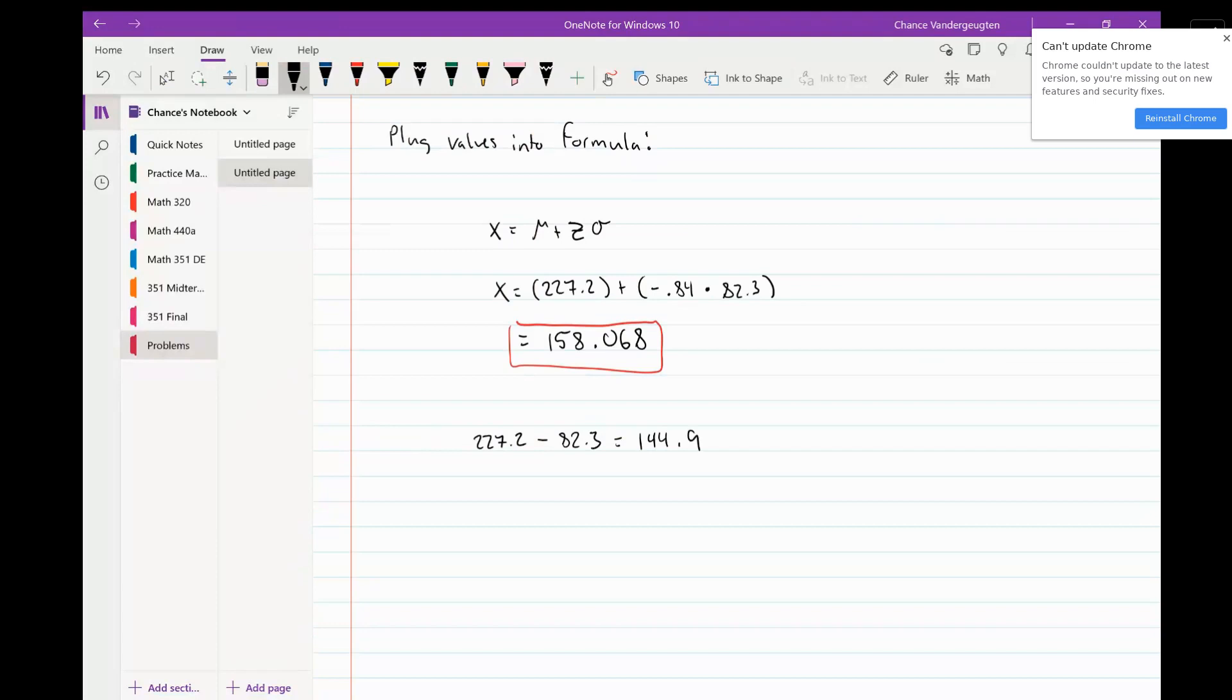The reason this is a good check is because if we have a normal distribution, here's the 50th percentile right here. Let me put zero here so it's standardized. If we go one standard deviation this way,